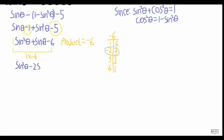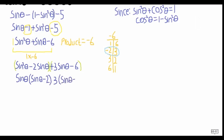So it becomes sine squared theta minus 2 sine theta plus 3 sine theta minus 6. As you can see, this can be factorized: sine theta open brackets sine theta minus 2, plus 3 open brackets sine theta minus 2. And as you can see, the numerator has now been fully factorized.